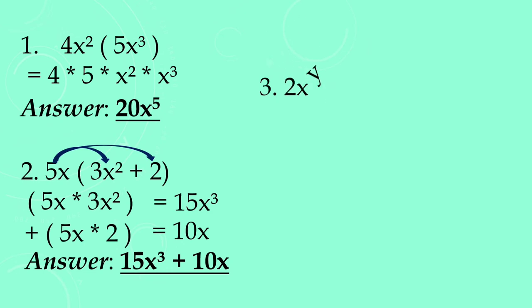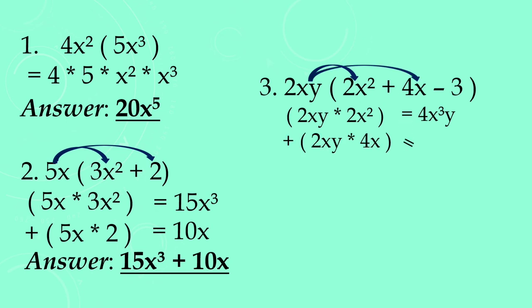Number 3, we have monomial pa rin then multiply to trinomial. Ganun pa rin, distributive property. So 2xy times 2x² is equals to 4x³y. Next, 2xy times 4x is equals to 8x²y. And lastly, 2xy times negative 3 is equals to negative 6xy.